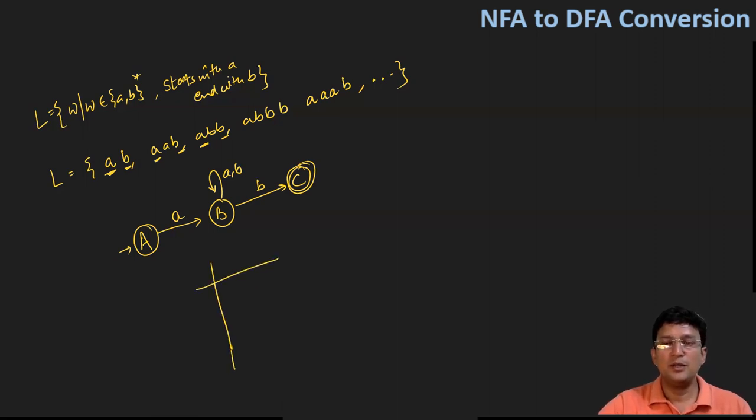If I have to convert this to the DFA, then let's draw the state transition table for this. So A on small a goes to B, and A on small b is undefined. B on small a goes to B, and B on small b goes to B or it goes to C. C on small a is undefined and C on small b is also undefined.